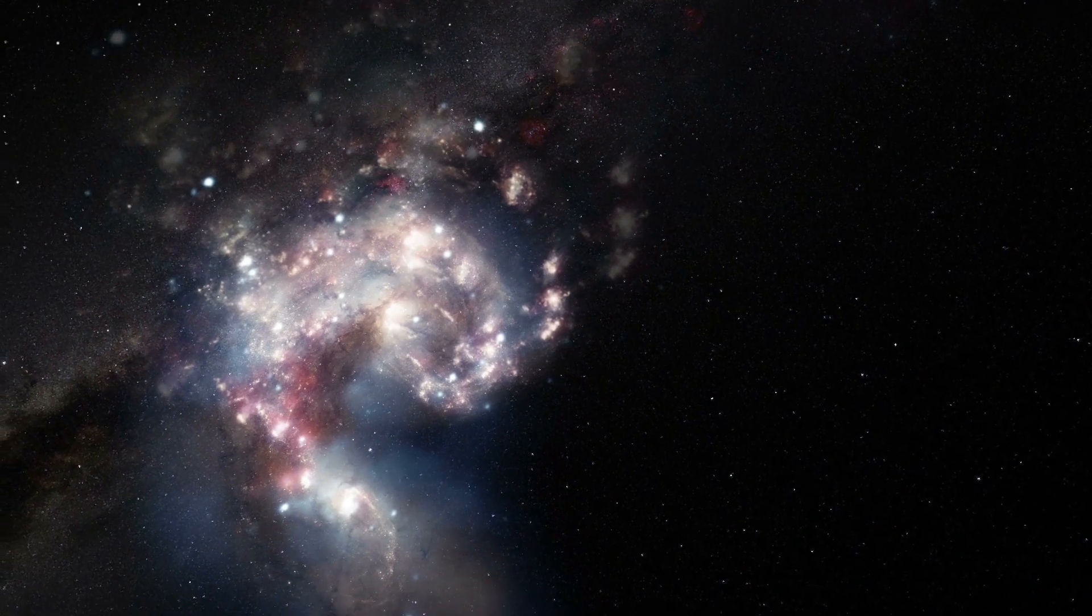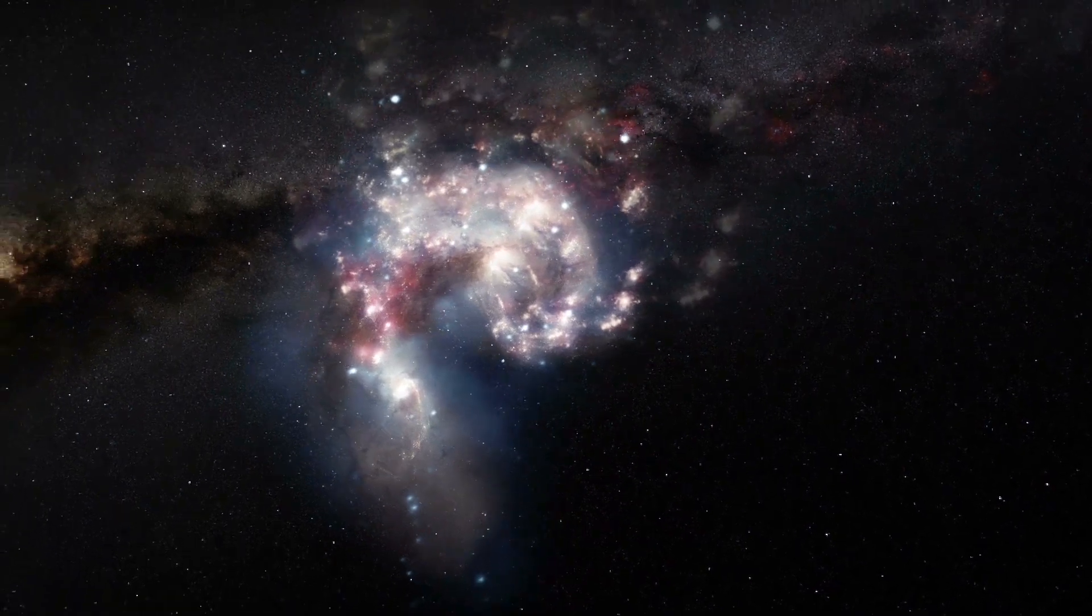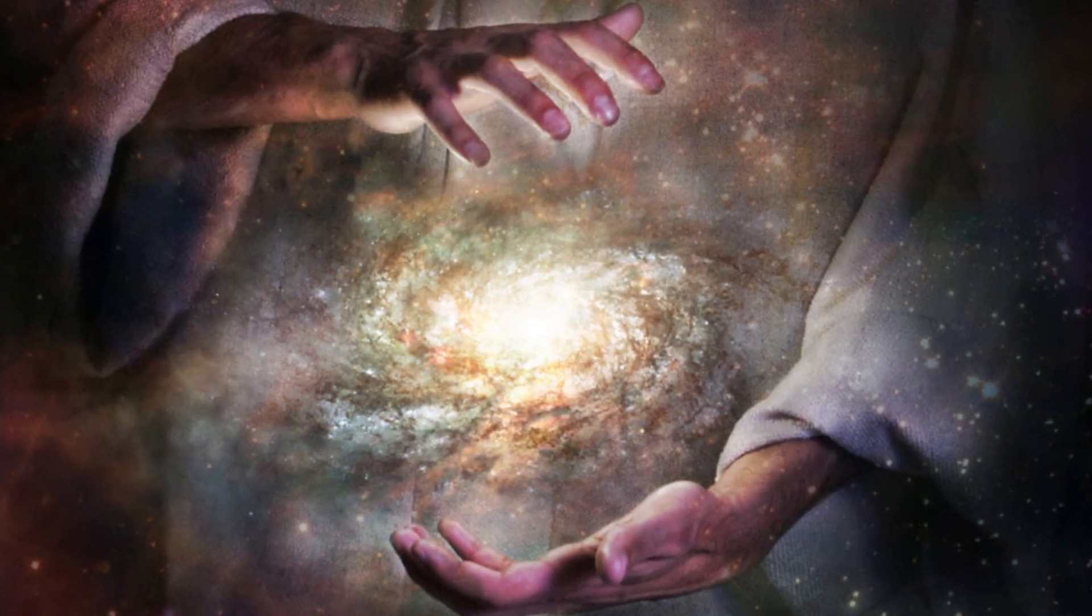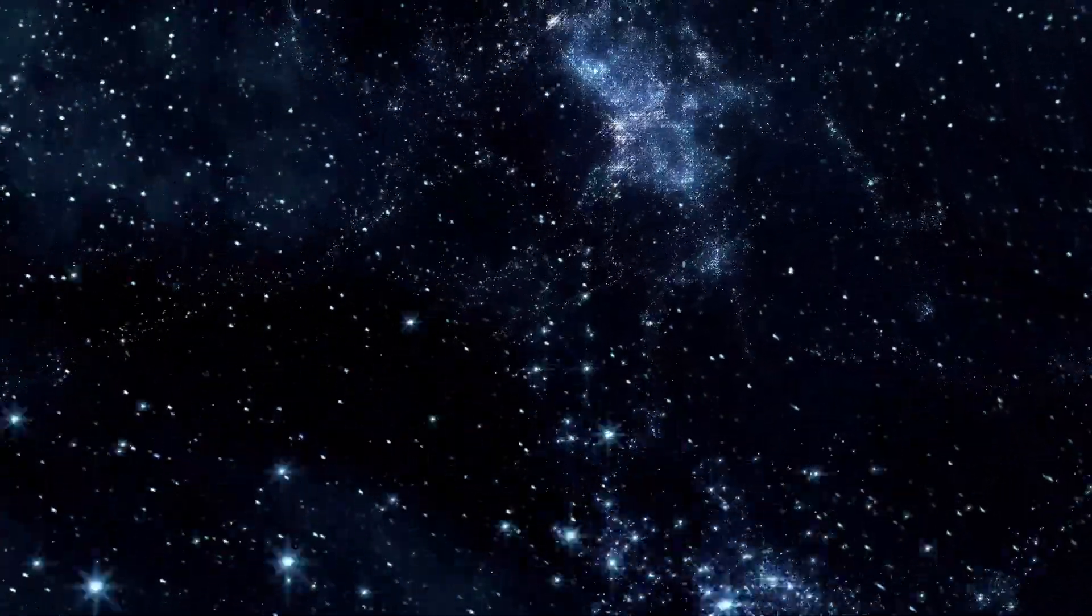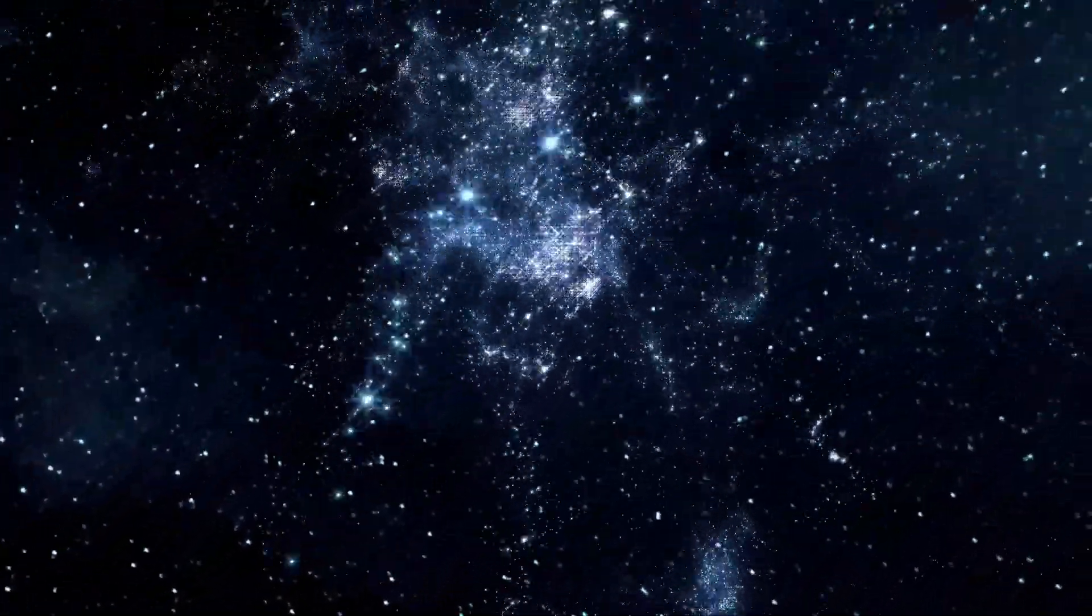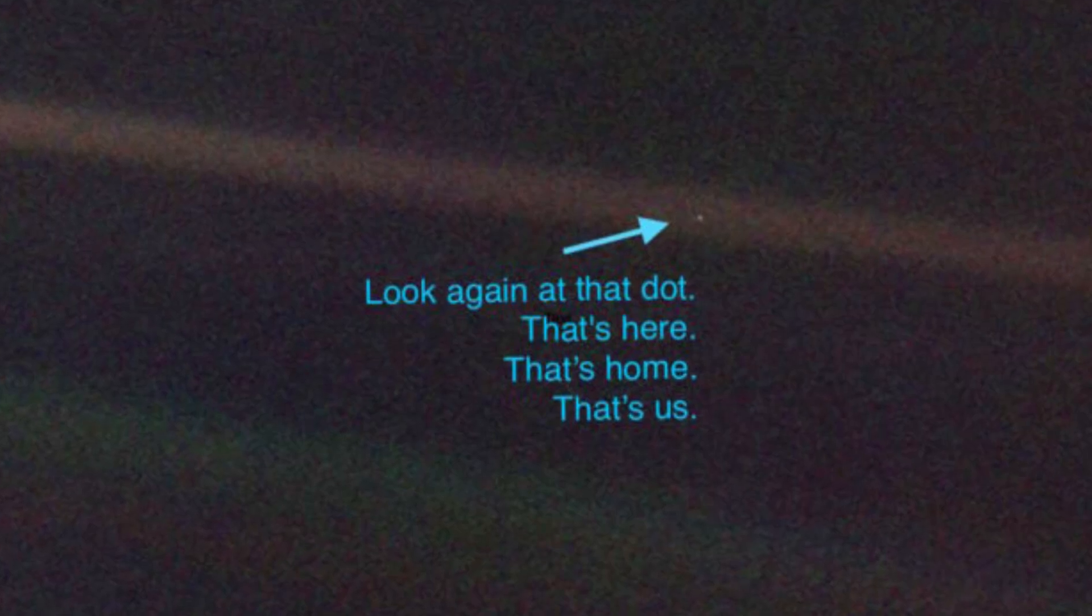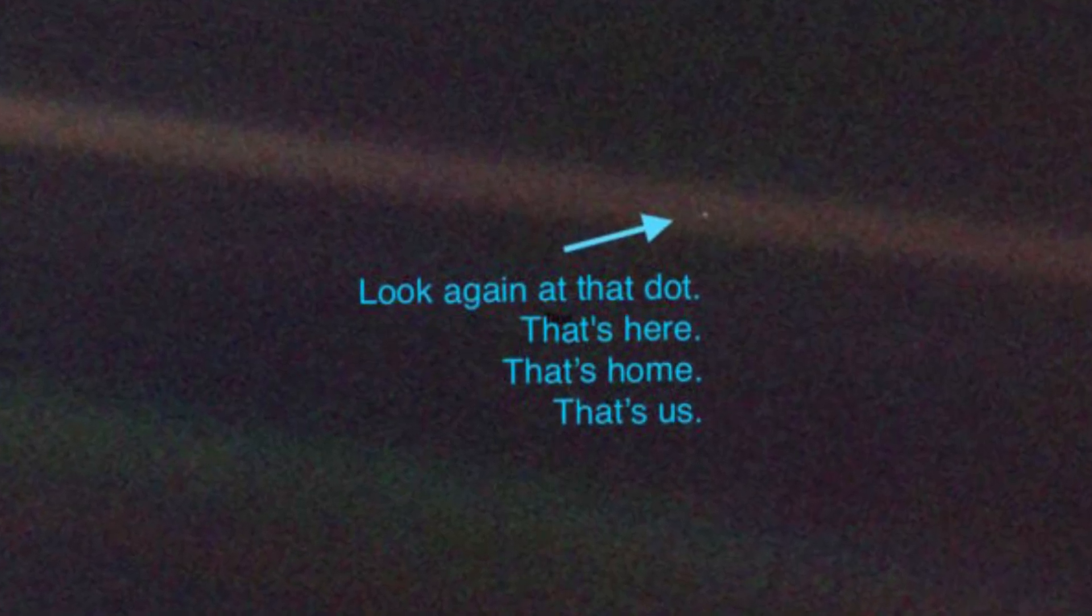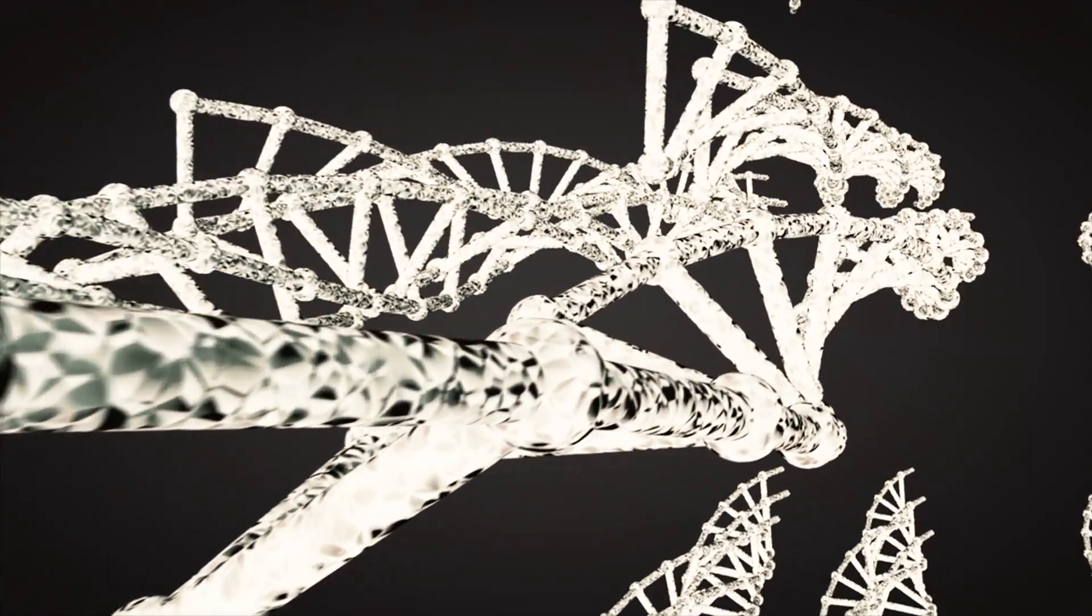Some believe that this lucky combination of factors is proof of a creator, since the odds of all these things occurring are so slim. However, there are a few issues with this. The incredible number of planets in the universe mean that there are bound to be some that happen to check all the right boxes. We didn't appear on Earth, and then it happened to be perfect. We appeared on Earth BECAUSE it was perfect. The conditions on Earth were such that early life could begin, and so it did, and eventually, through evolution by natural selection, we appeared.